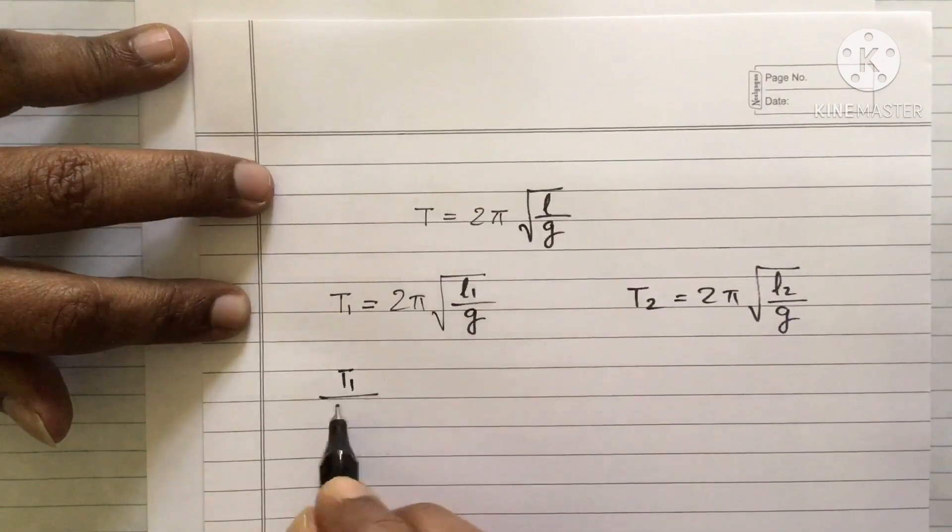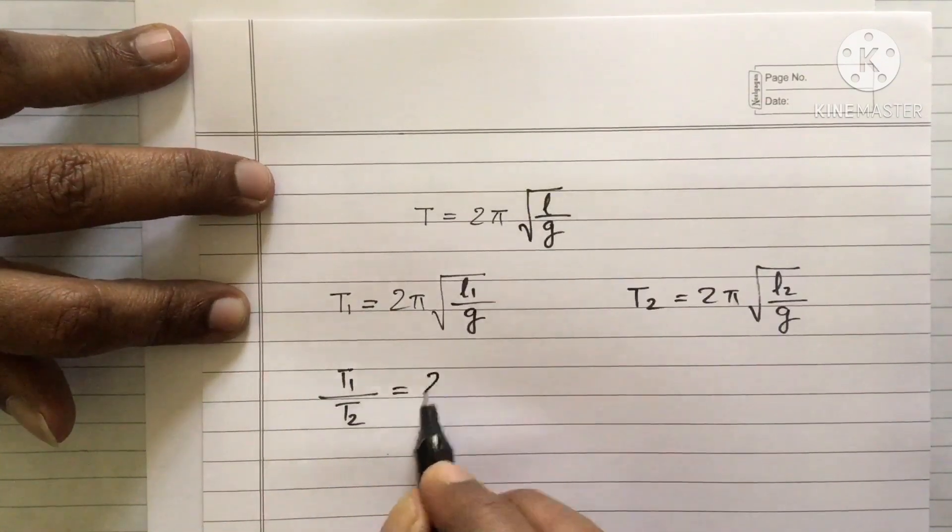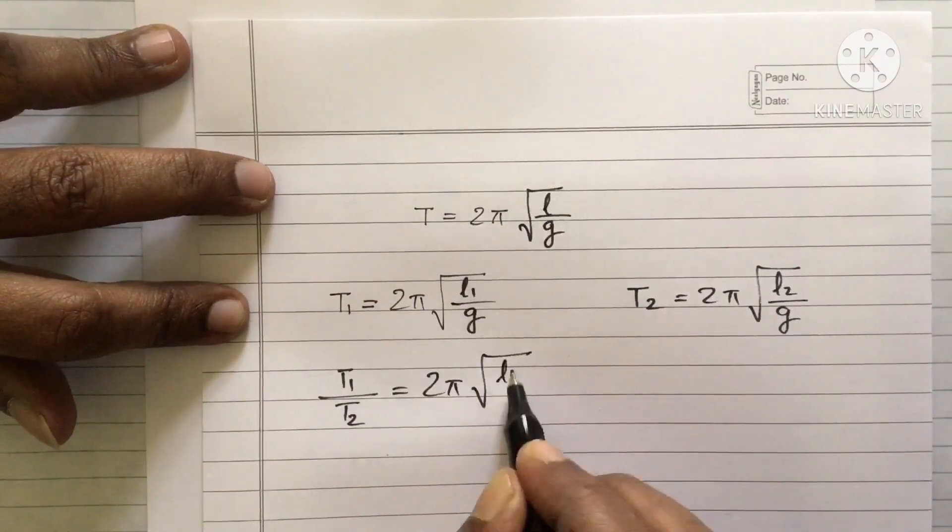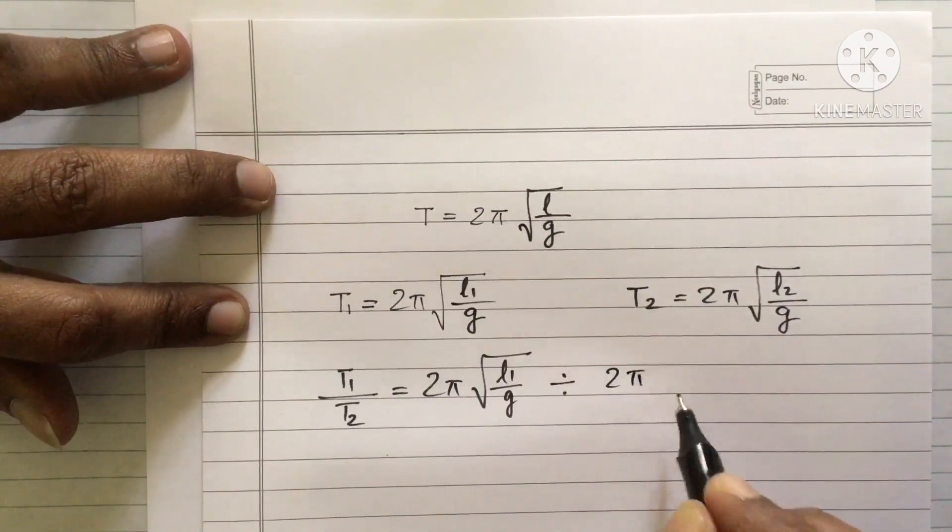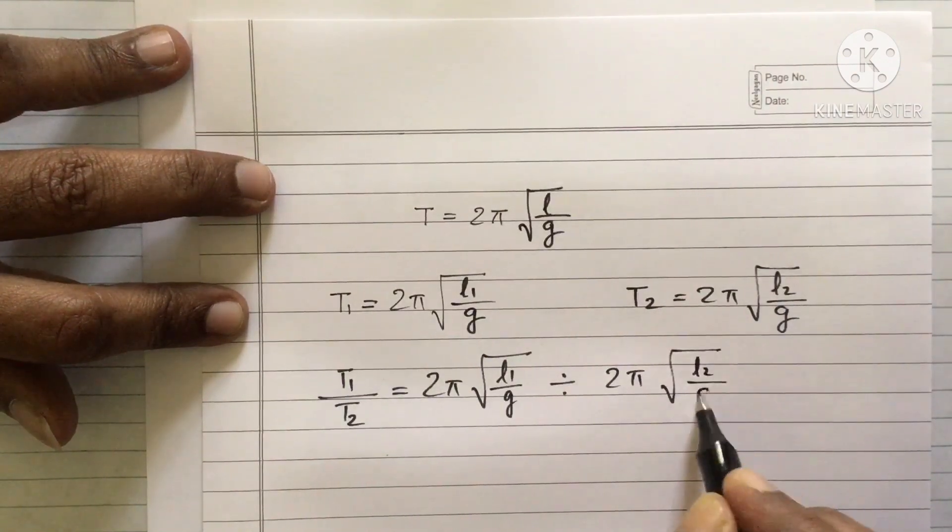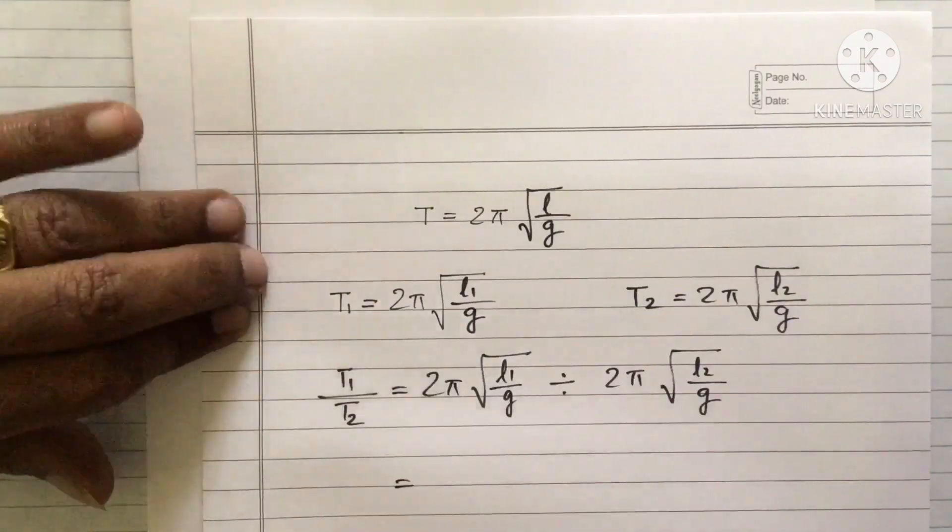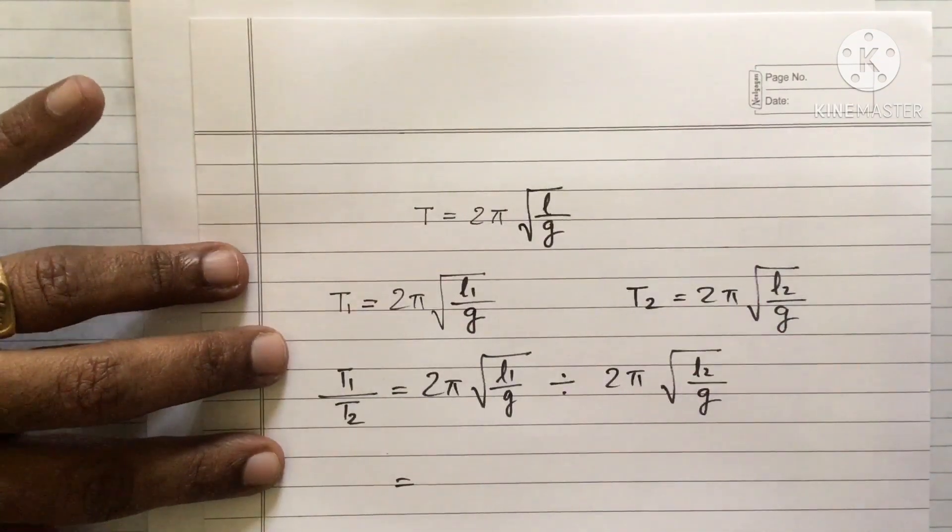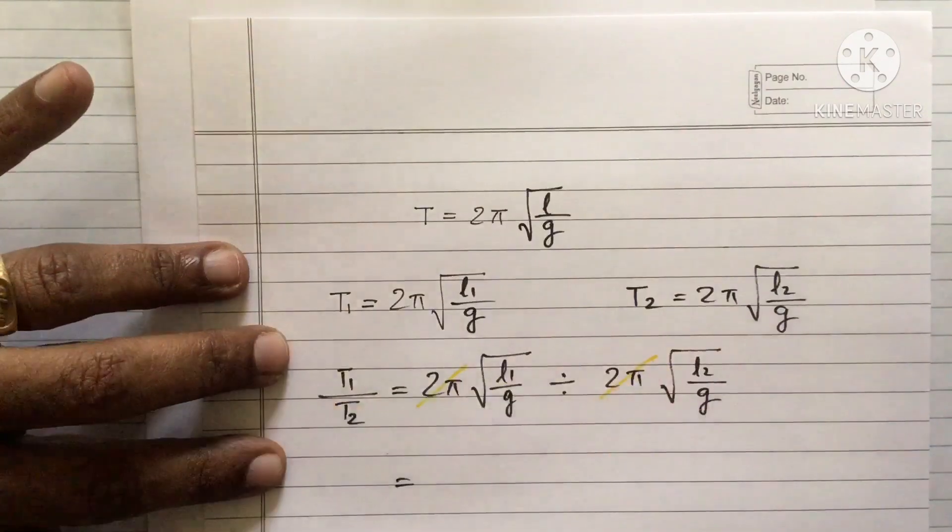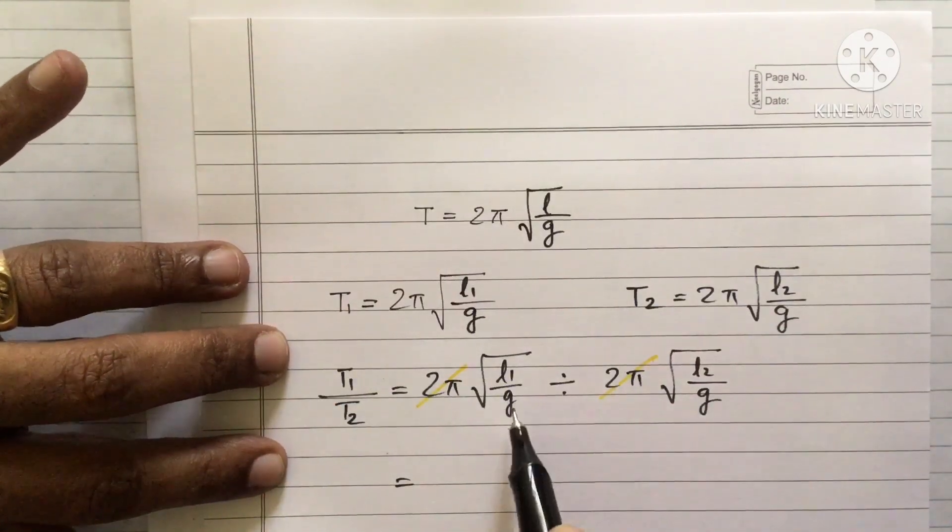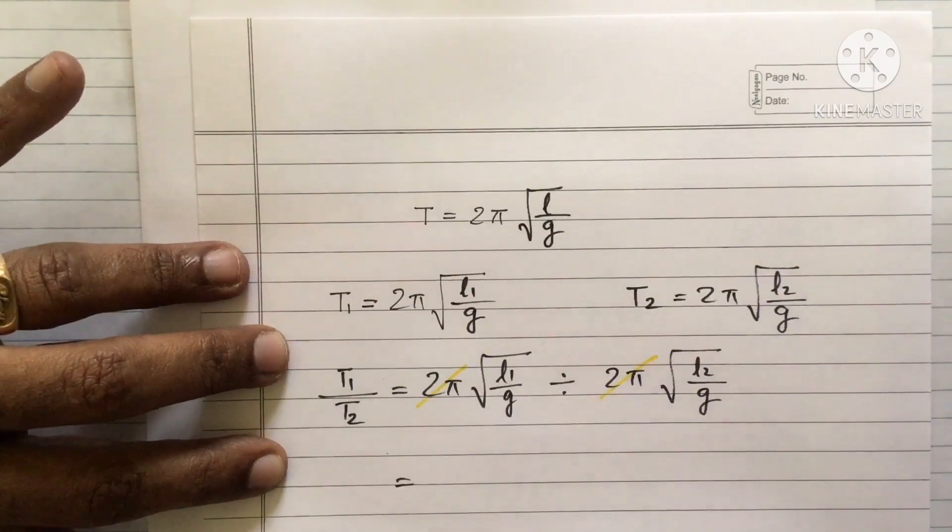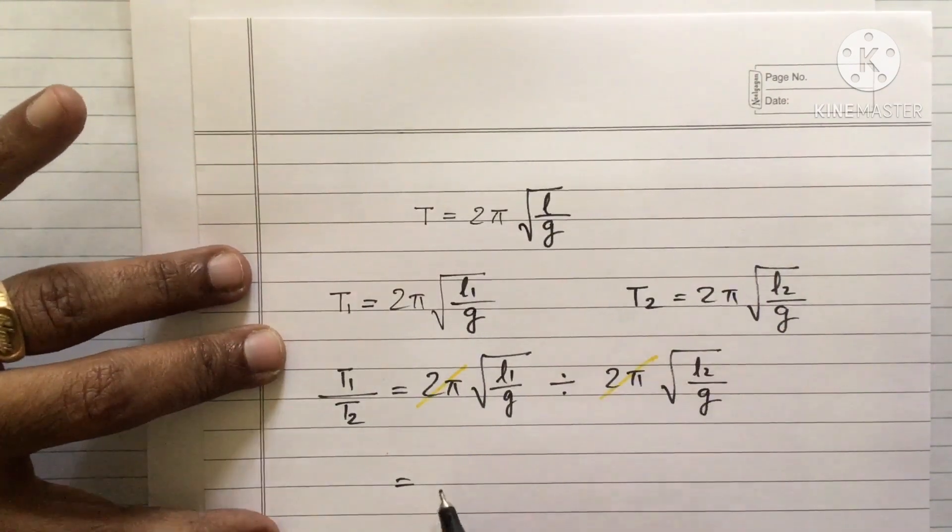When I am dividing T1 by T2 that is equal to 2 pi square root of L1 by G divided by 2 pi square root of L2 by G. Again, it is easy to understand this 2 pi and 2 pi will get cancelled. In fact, this G and this G will get cancelled. But let me do one more step.